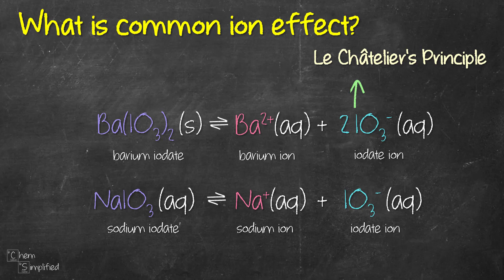According to Le Chatelier, the position of equilibrium is going to move to counteract the change. Since we have more iodate ion, in order to decrease it — counteracting the additional iodate ion — the equilibrium is going to move in the reverse reaction, which is to the left, and that means we're going to have precipitation and form more barium iodate solid. So the molar solubility of barium iodate is going to decrease due to the common ion effect.